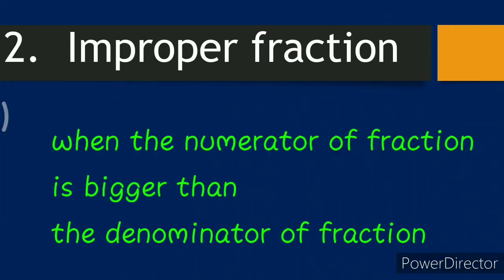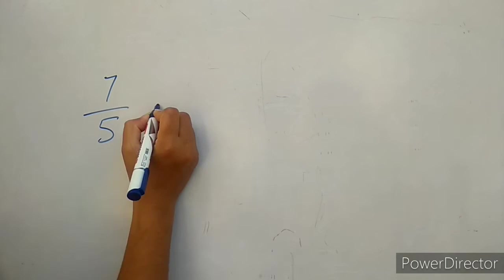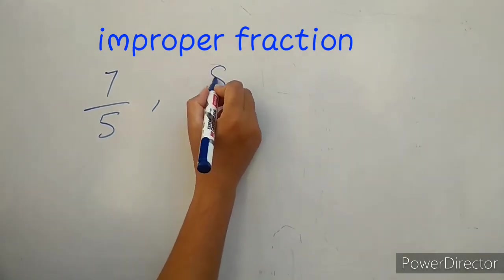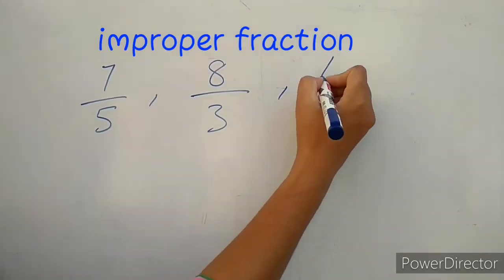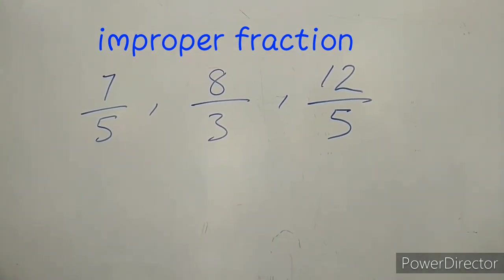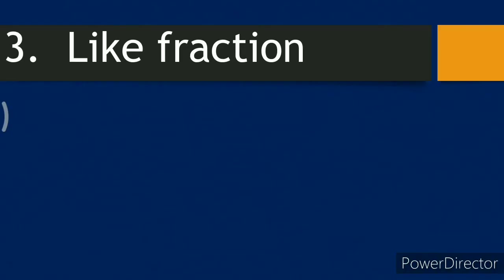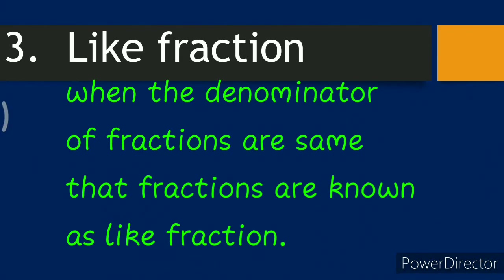Second is improper fraction. When the numerator of a fraction is bigger than its denominator, that fraction is known as an improper fraction. For example, seven over five, eight over three, twelve over five — all are improper fractions because their numerator is greater than their denominator.